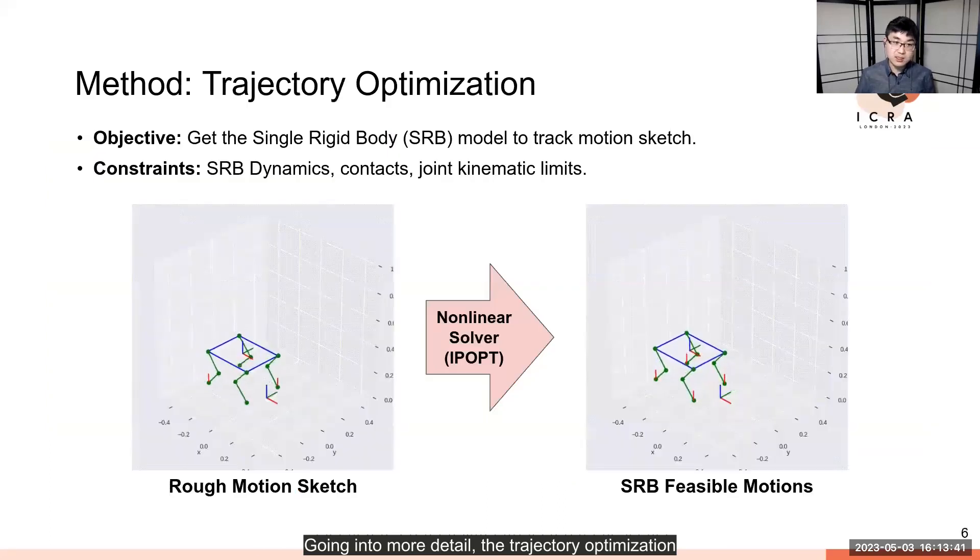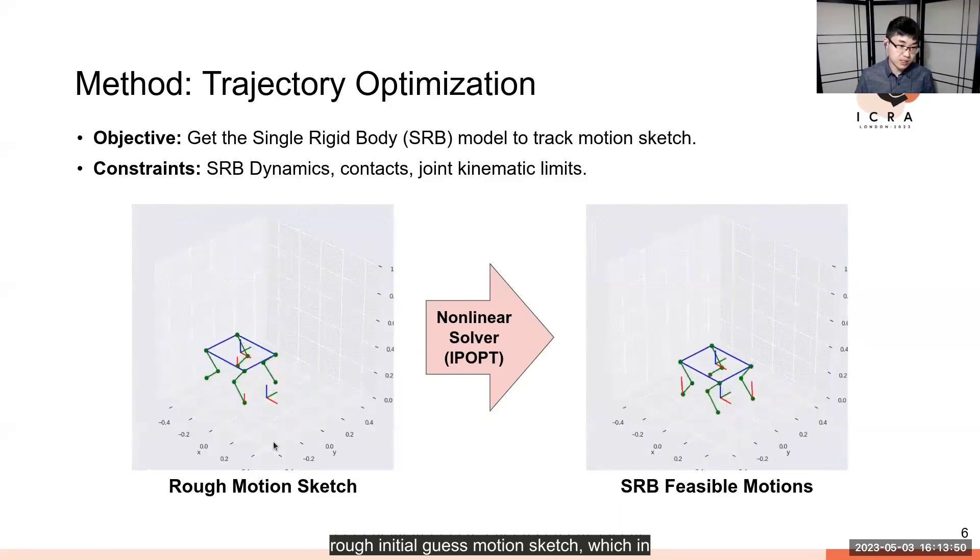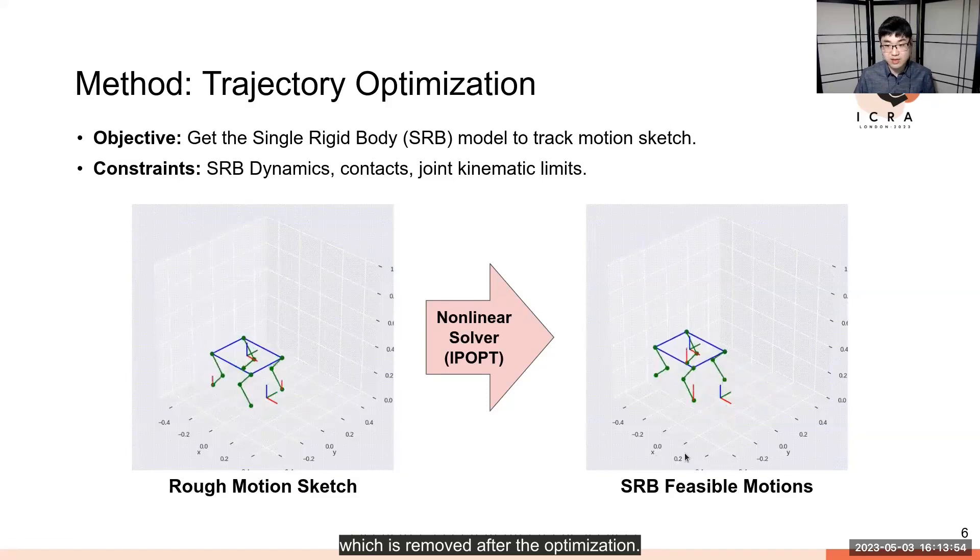Going into more detail, the trajectory optimization uses a single rigid body model to create motions that are feasible for it, given some rough initial guess motion sketch, which in this case exhibits a foot sliding artifact that is removed after optimization.